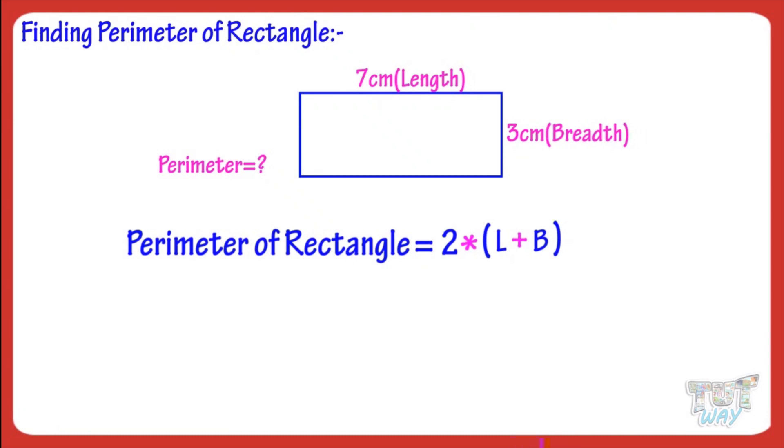Putting the values we get, 2 multiplied by 7 plus 3, 2 multiplied by 10, equals 20 cm. So, parameter of this rectangle is 20 cm.